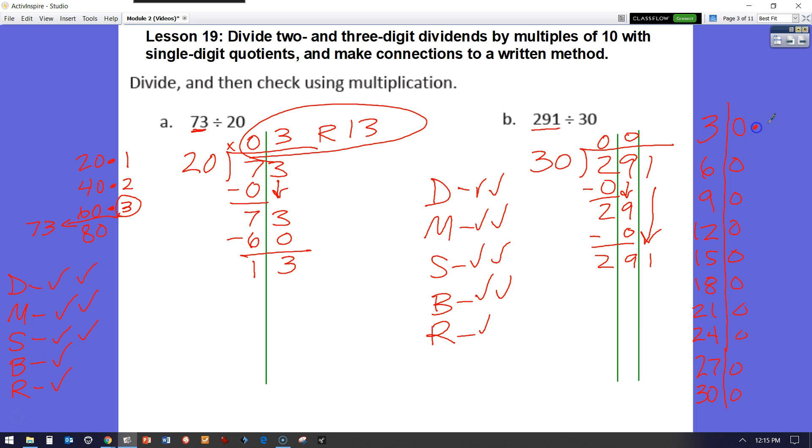If we do that, we have 30 times 1, 30 times 2, 30 times 3, 30 times 4, 30 times 5, 30 times 6, 30 times 7, 30 times 8, and 30 times 9. I know that my 291 falls between 270 and 300. So I know that it's going to be 9 times. 9 times 30 is 0 times 9 is 0. 9 times 3 is 27. I had it here already.